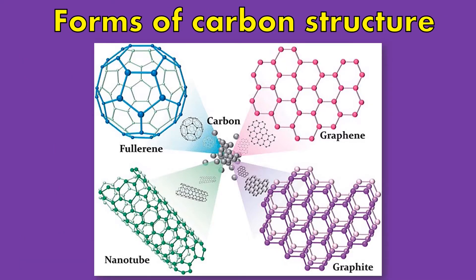These are the different allotropes or structures of a carbon compound. It can be in the form of diamond, graphite, graphene, and fullerene.